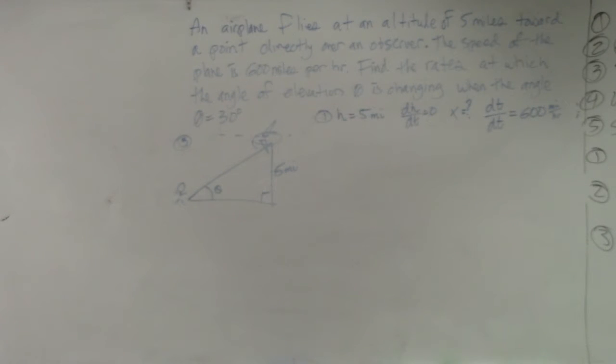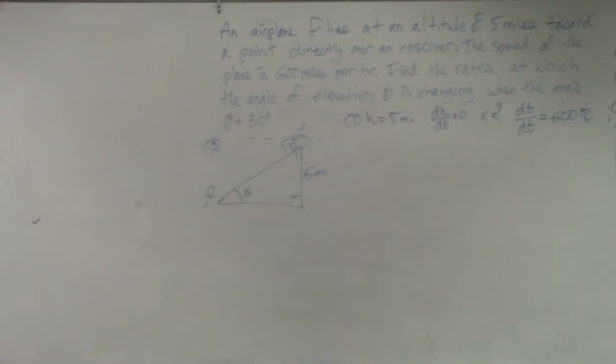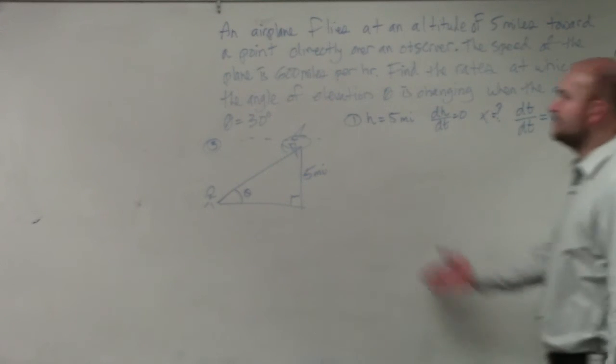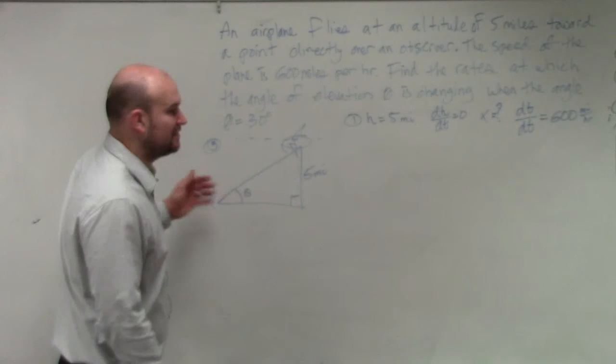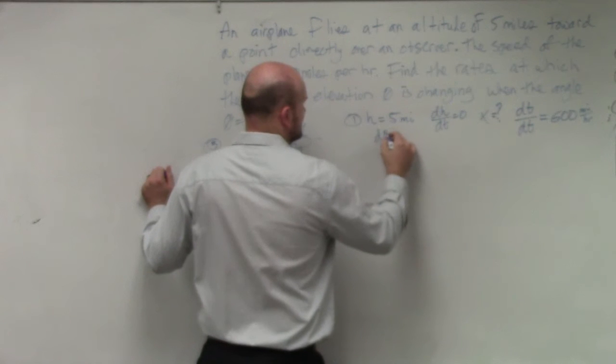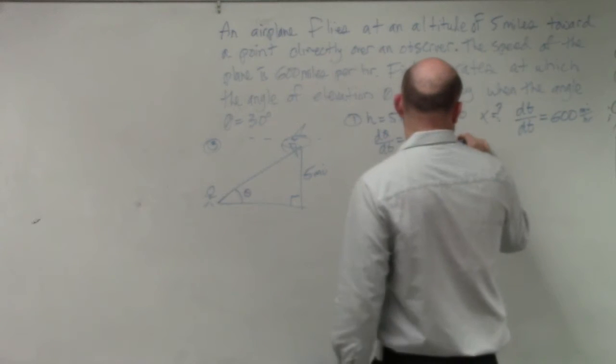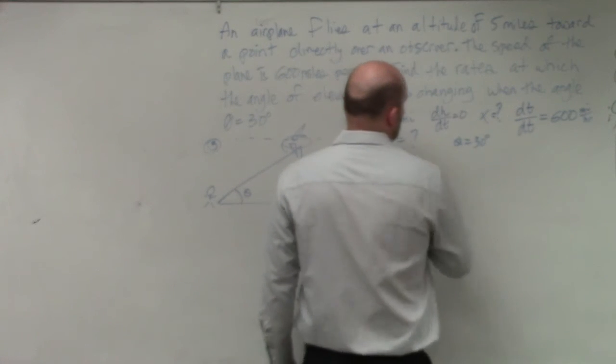And now, what we need to do is, the last thing is, we don't know what the distance is, which would be the hypotenuse of the plane to the observer, nor do we know what the change in that is. However, if we look at our question, it's saying find the rates at which the angle of elevation is changing when the angle of theta is 30 degrees.